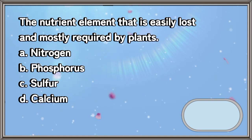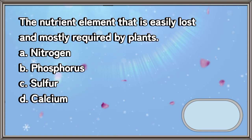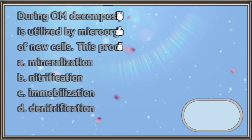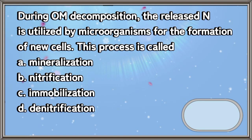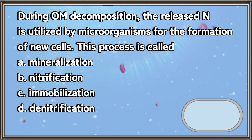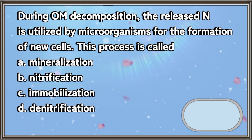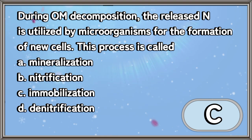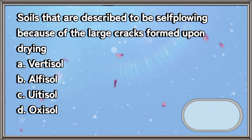The nutrient element that is easily lost and most required by plants: a) nitrogen, b) phosphorus, c) sulfur, d) calcium. The answer is letter A. During organic matter decomposition, the released nitrogen is utilized by microorganisms for the formation of new cells. This process is called: a) mineralization, b) nitrification, c) immobilization, d) denitrification. The answer is letter C.